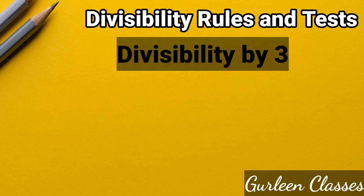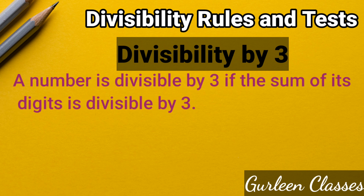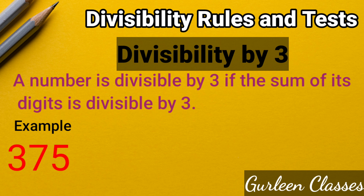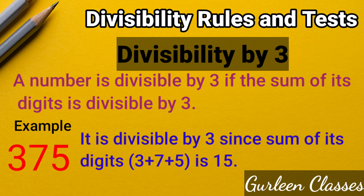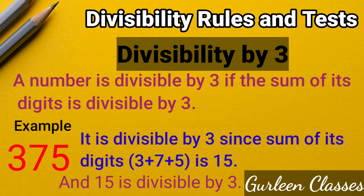Divisibility by 3: A number is divisible by 3 if the sum of its digits is divisible by 3. Example: the number 375. It is divisible by 3 since the sum of its digits, 3 plus 7 plus 5, is 15, and 15 is divisible by 3.